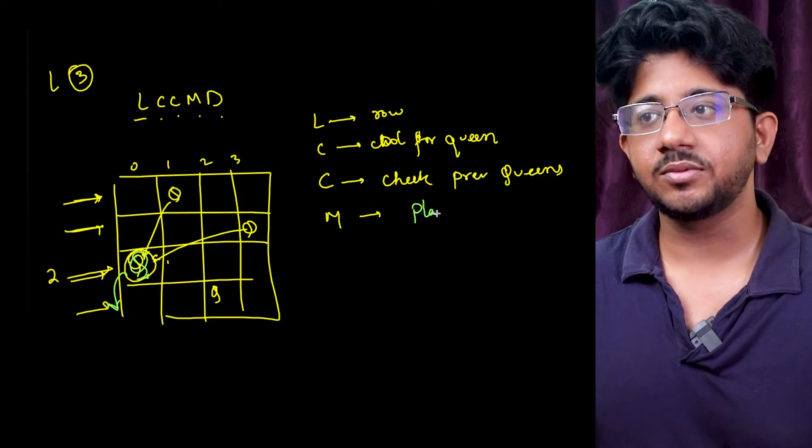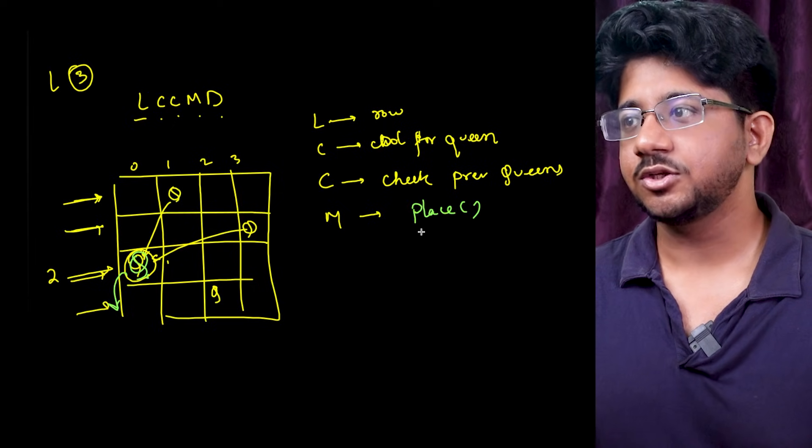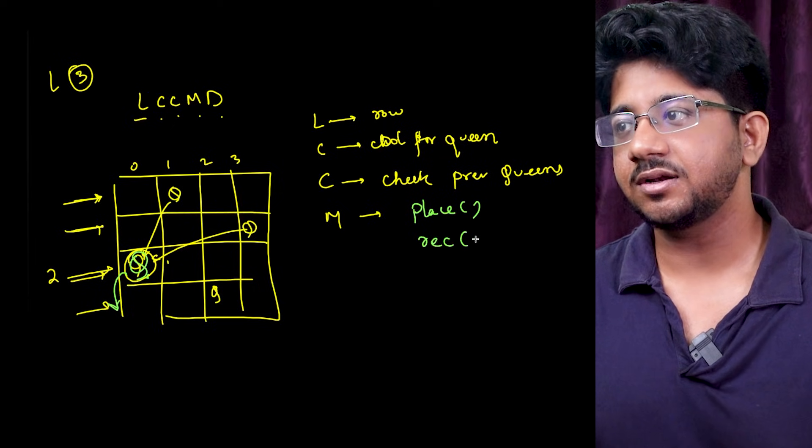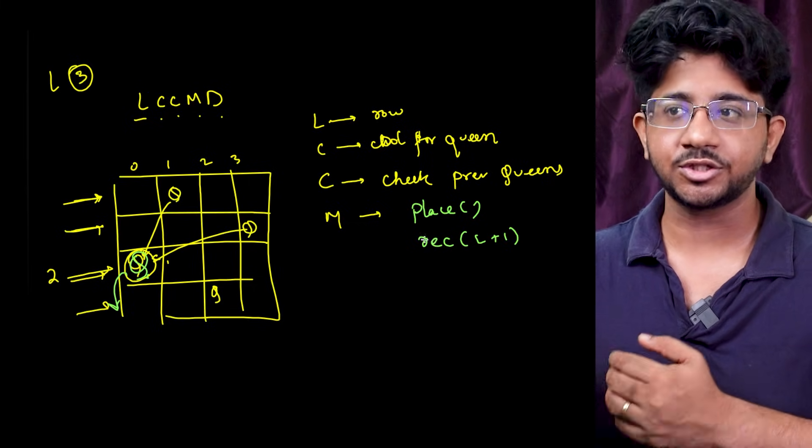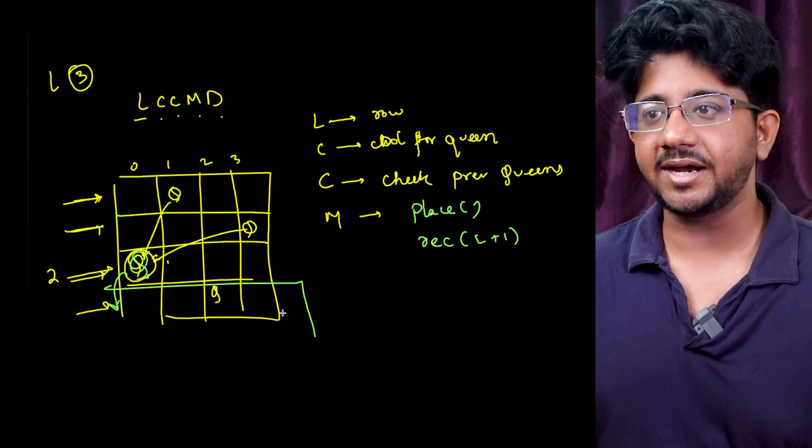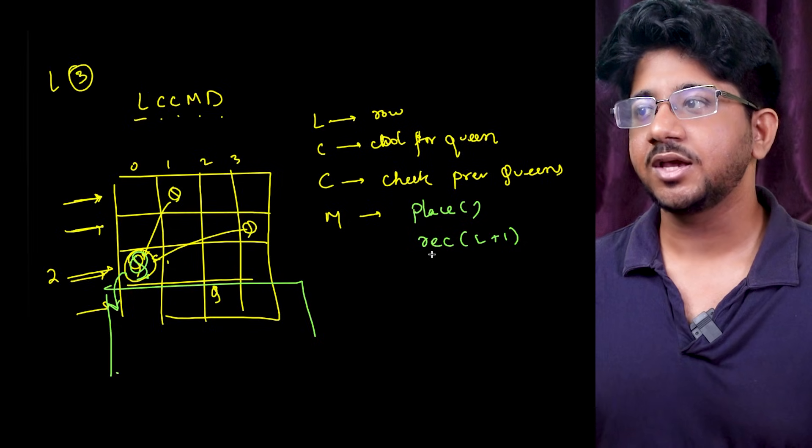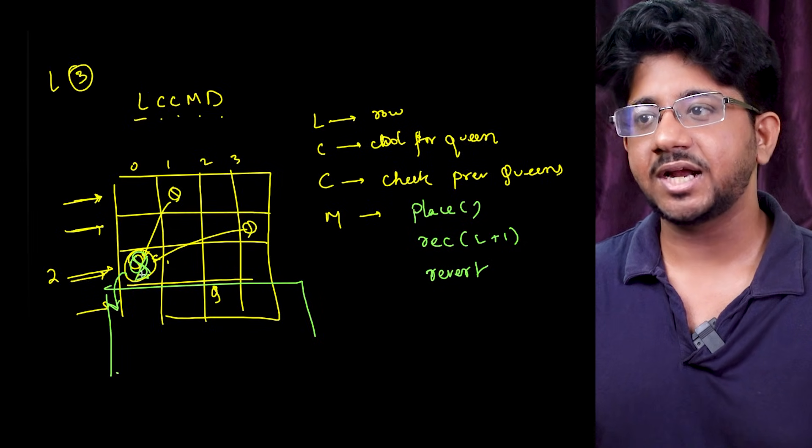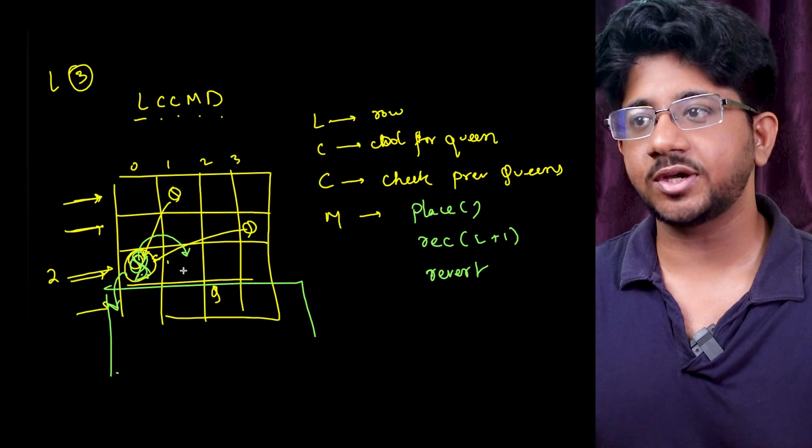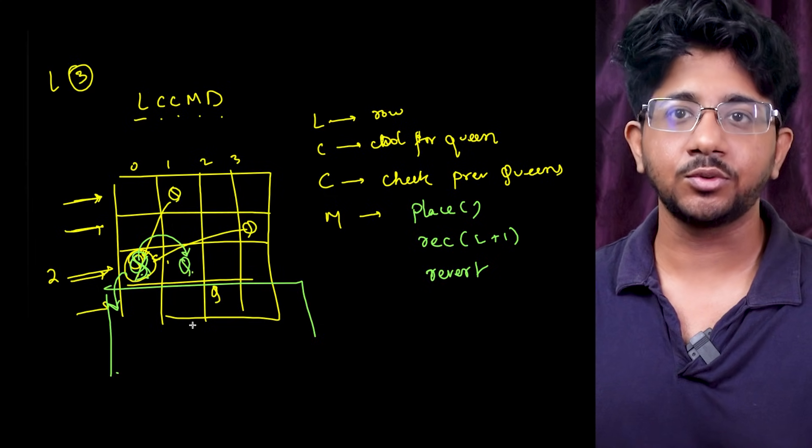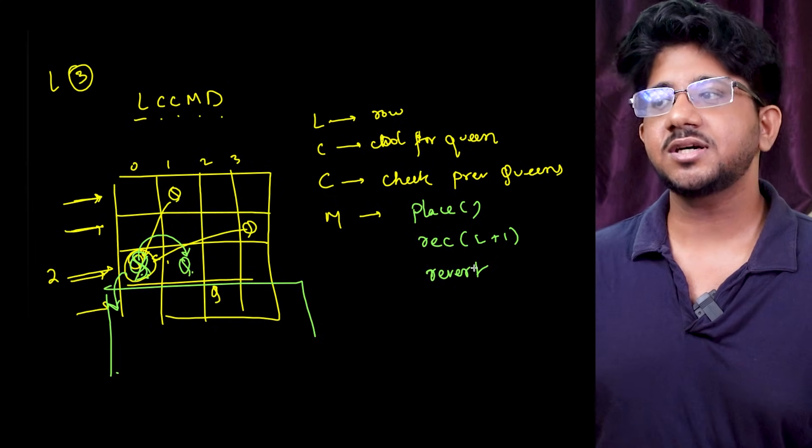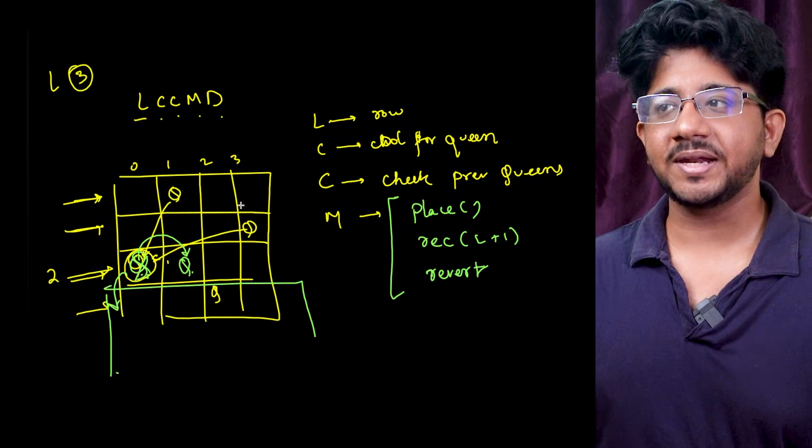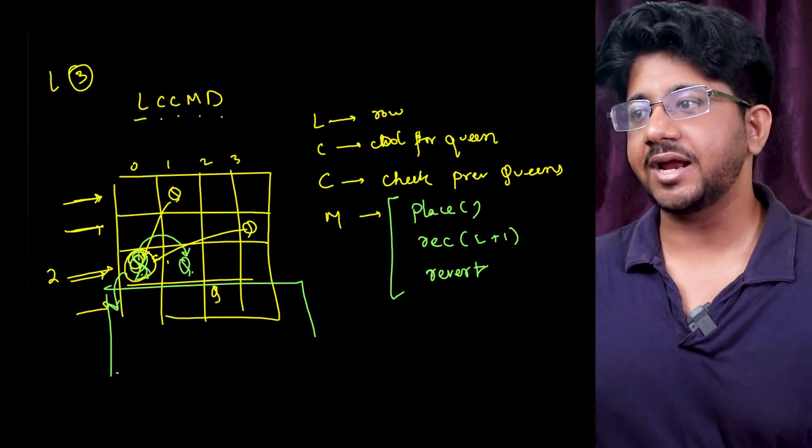Basically you place on whatever data structure you are maintaining, you recurse to the next level and then when you come back from the recursion of the next level, when you complete enumerating everything in the next level, you come back and you revert. You remove this queen so that when you loop to the next choice you can place queen and again maybe go into recursion. Something like that.